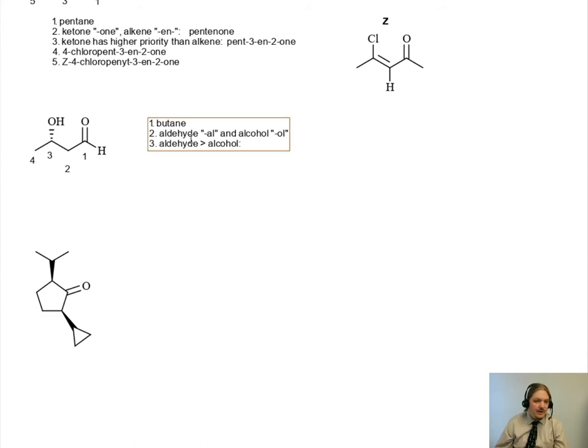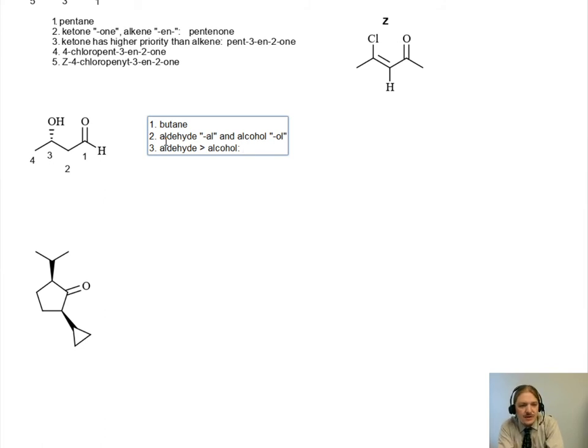We want the high-priority functional group to have the lowest possible number. And so the alcohol is at 3, and the aldehyde is at 1. And if you watched my video on the nomenclature of aldehydes, then you know that aldehydes are almost always on carbon 1. And we don't put in the 1 for the al, because that aldehyde, if it's the suffix, is always at carbon 1.